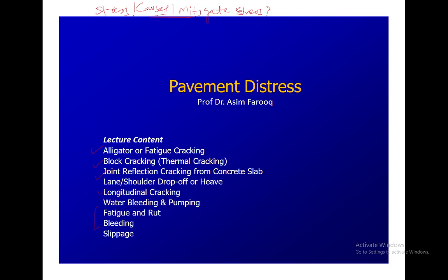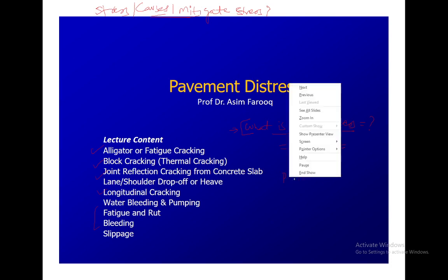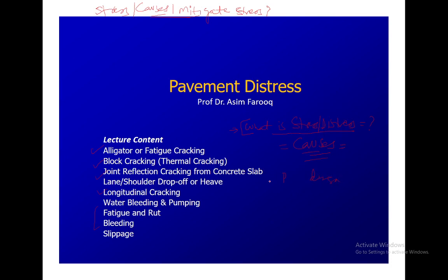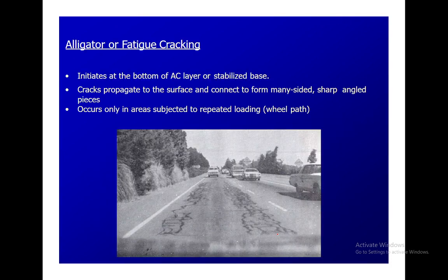Surface distresses are basically an indication of poor or unfavorable pavement performance — a sign of impending failure or unsatisfactory performance from the pavement, which leads to deterioration. There are many causes through which distresses can happen, but most of them start from low stiffness of material, poor mix design, poor HMA layer construction, lack of liquid asphalt emulsion, or excessive moisture in the subgrade layer.